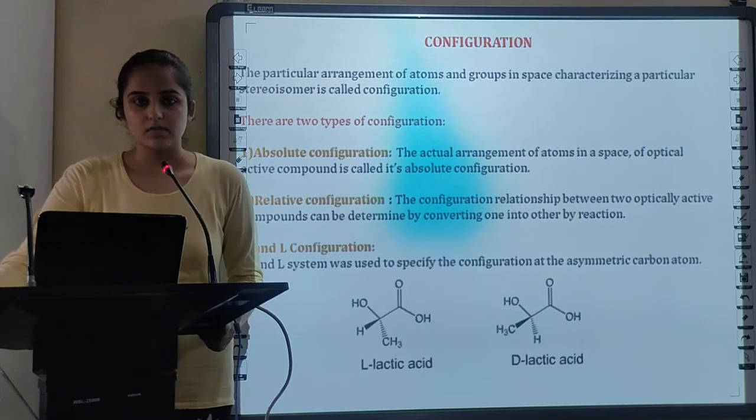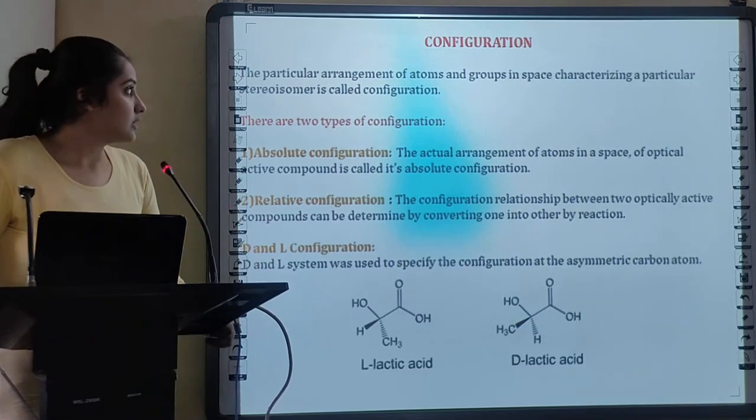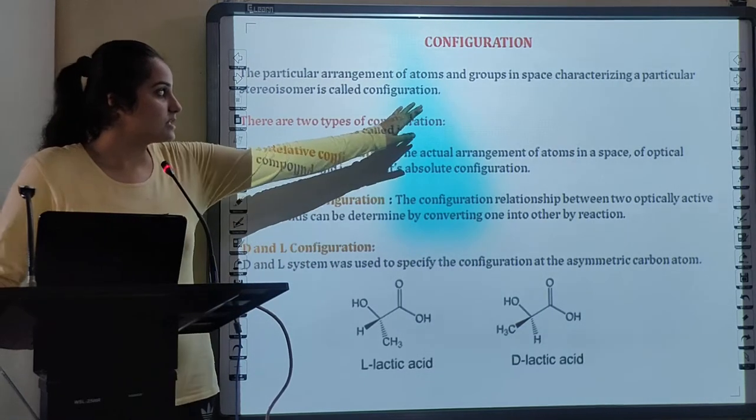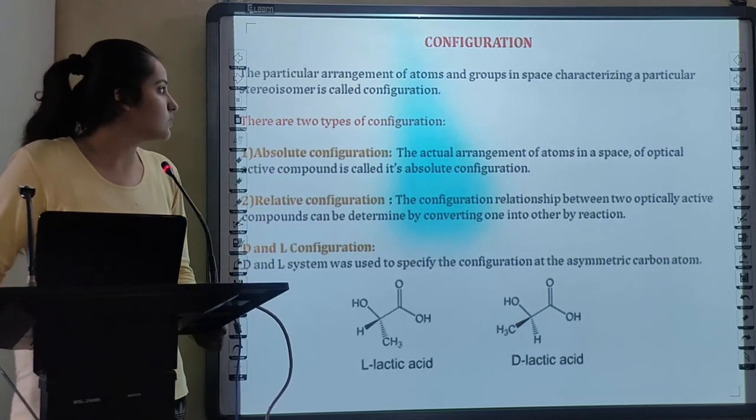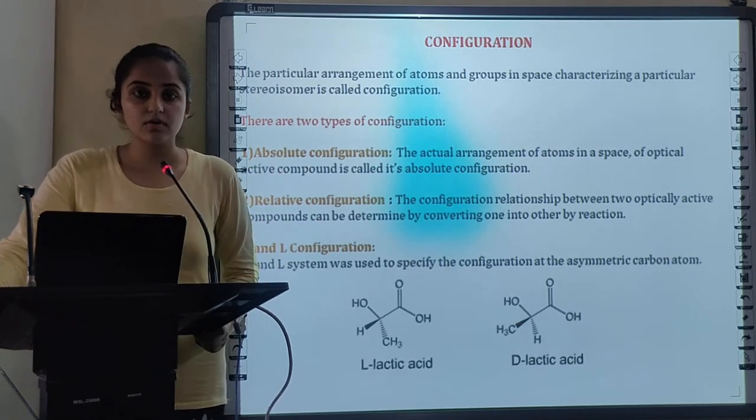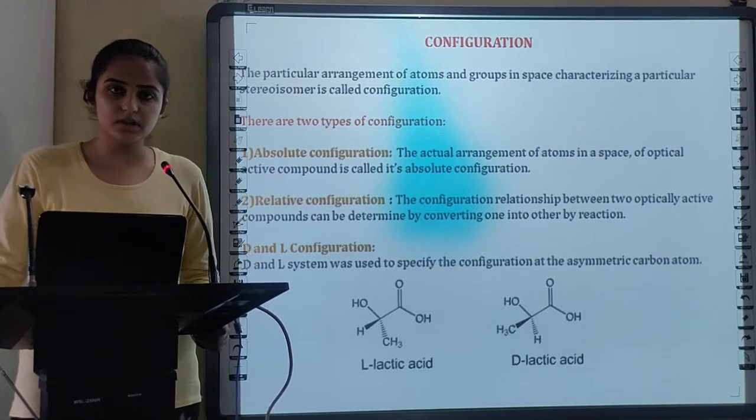Next is Configuration. What is Configuration? The particular arrangement of atoms and groups in space characterizing a particular stereoisomer is called Configuration. Configuration has further 2 types: Absolute configuration and Relative configuration.